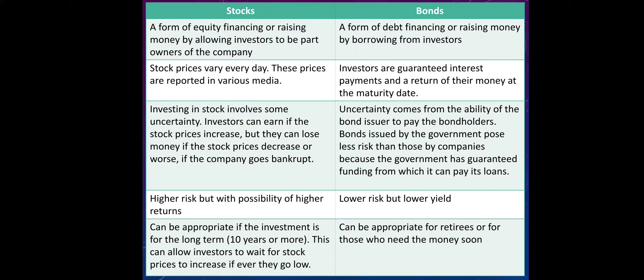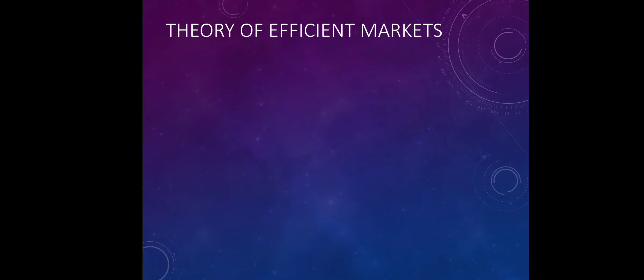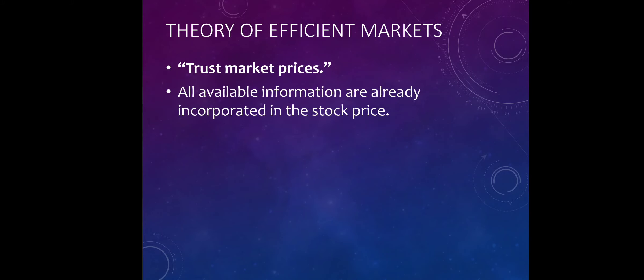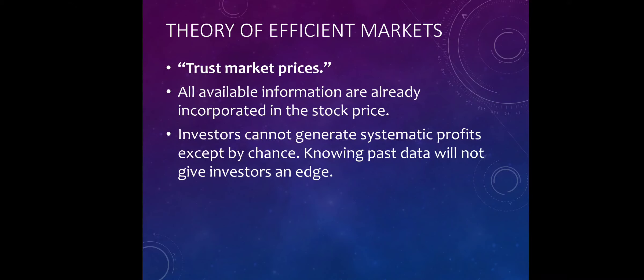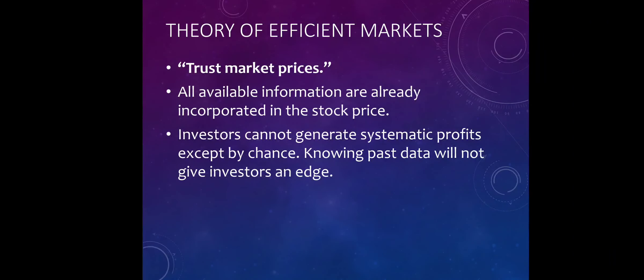Stocks can be appropriate if investment is for the long term, as this can allow investors to wait for stock prices to increase if ever they go low. For bonds, this is appropriate for short-term investments or for those who need their money soon. We also have the theory of efficient markets. According to this theory, we have to trust market prices because all available information is already incorporated in the stock prices — there are no hidden charges. Investors cannot generate systematic profits except by chance, and knowing past data will not give investors an edge. There is no accurate predictor that will tell you what stock prices will be in the future.